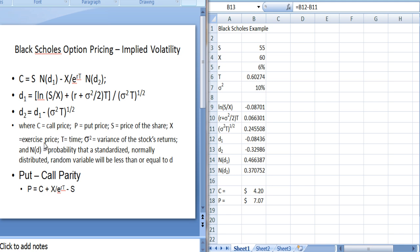The N(d) is just a statistical function. It's the probability that a standardized normally distributed random variable will be less than or equal to d, and you can just look it up in a table or you can use Excel.